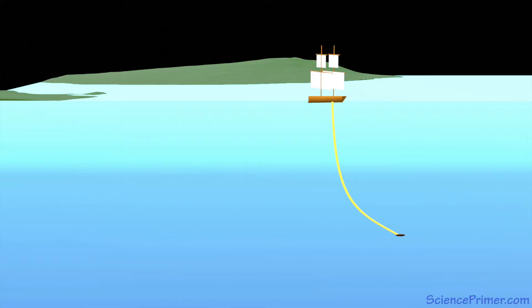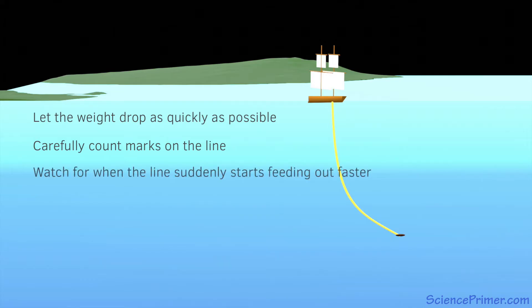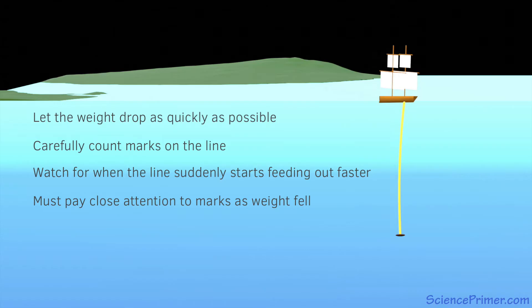Early solutions to addressing errors introduced by drift and the weight of the line involved marking the line at set intervals and allowing the weight to drop to the bottom as fast as possible. As the weight fell, the marks were counted. The weight was assumed to have hit bottom when the line speed suddenly increased. Once the weight hit bottom, sailors could hoist the line in, taking up slack and positioning the ship so that the line was as close to vertical as possible. Early versions of these methods required a great deal of attention over an extended period because in deep water the weight could take an hour or more to reach the bottom, and an accurate count of the marks had to be maintained the entire time.